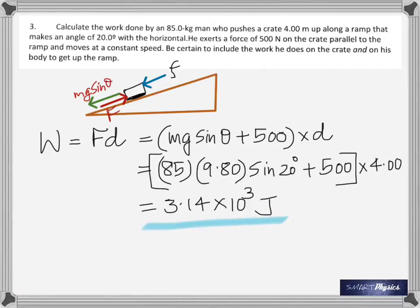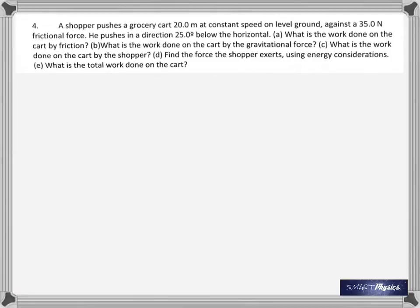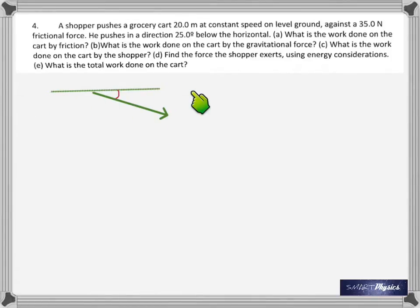Next problem: a shopper pushes a grocery cart 20 meters at constant speed on level ground against 35 newtons of friction. He pushes in a direction 25 degrees below the horizontal. The diagram shows the applied force at 25 degrees below horizontal, and friction is opposite to the direction of motion.